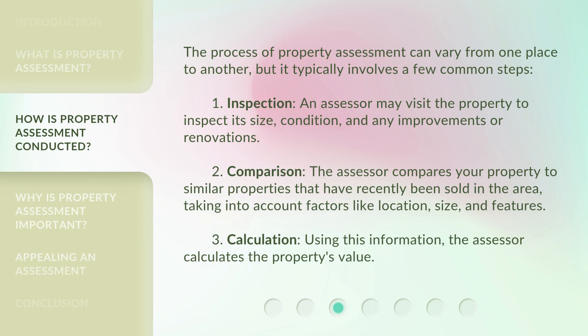The process of property assessment can vary from one place to another, but it typically involves a few common steps. First, inspection: an assessor may visit the property to inspect its size, condition, and any improvements or renovations. Second, comparison: the assessor compares your property to similar properties that have recently been sold in the area, taking into account factors like location, size, and features. Third, calculation: using this information, the assessor calculates the property's value.